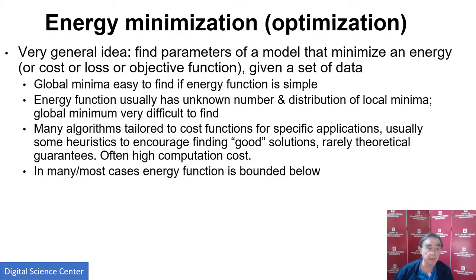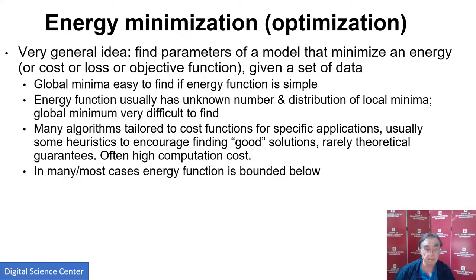Physics also gives you both methods to find minima, and examples of interesting loss functions with lots of interesting structures. Global minima are only easy to find if the energy function is simple — if it has a nice simple shape. But mostly you don't actually know whether it's simple or not, and you don't know whether you've found the real minimum or a false one. The energy function typically has an unknown number and distribution of local minima.